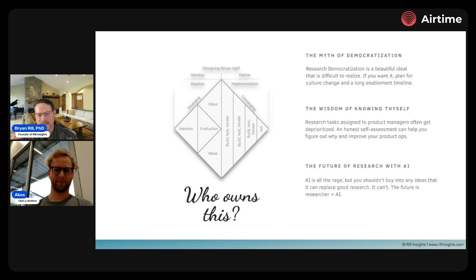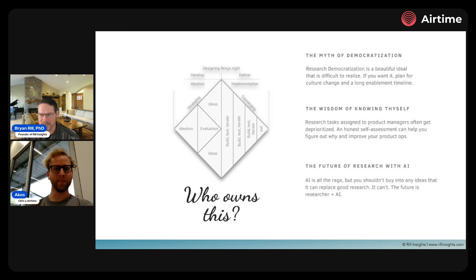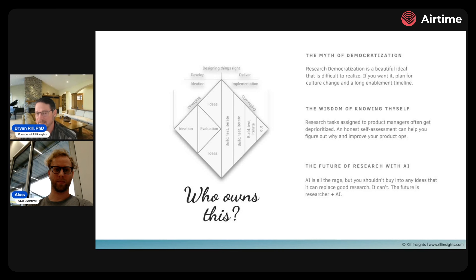I want to talk about ownership of these processes in product teams. I'm a big fan of Marty Kagan's book Inspired and the Triad Model, but it has consequences that get overlooked. The triad — a product manager, a designer, and someone from engineering — doesn't include the researcher, and that's a mistake. What ends up happening is the product manager becomes responsible for research. I've worked in organizations with this beautiful idea of democratizing research — having everybody do a little bit — and it is a beautiful ideal. But it is a big commitment and a big culture change.